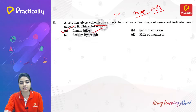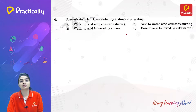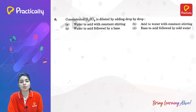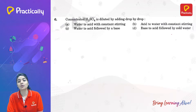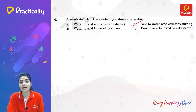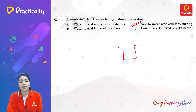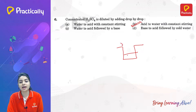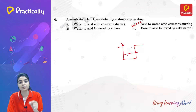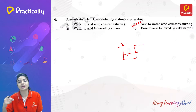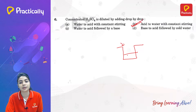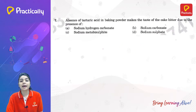Concentrated H₂SO₄ is diluted by: acid to water, water to acid, water to acid followed by a base, or base to acid followed by cold water. Since diluting concentrated H₂SO₄ is a very exothermic reaction, we must first take water and then add the acid drop by drop with constant stirring. So option B — acid to water — is the correct procedure.